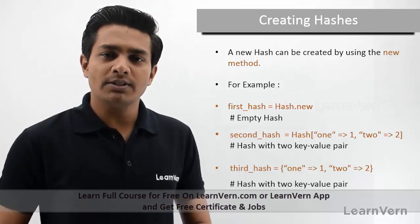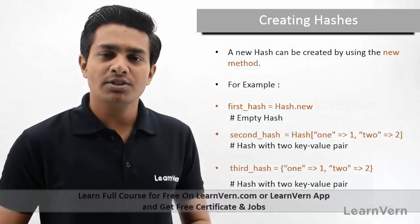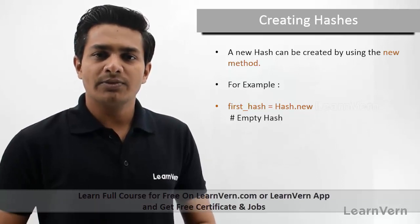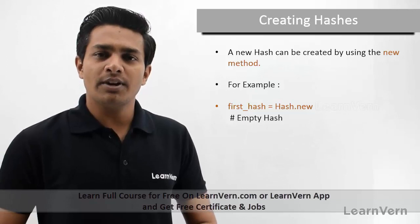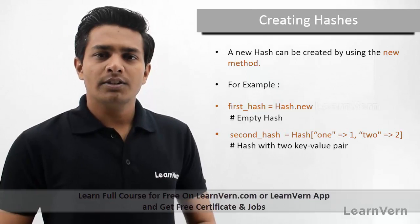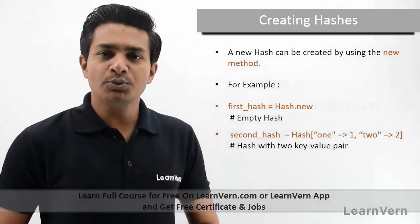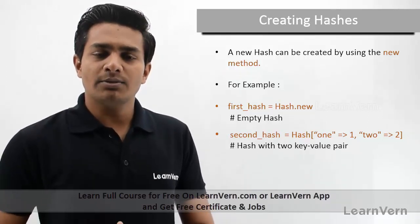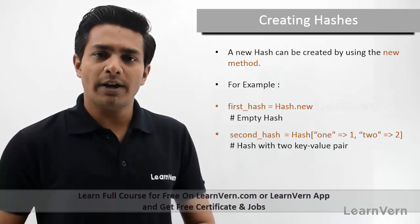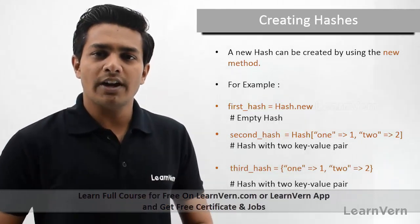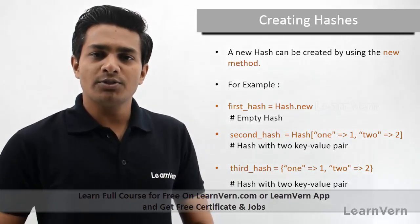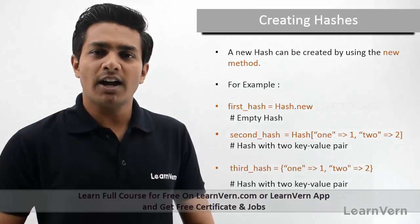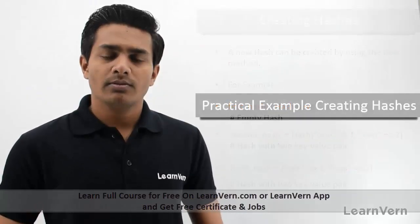Here on screen you can see I have created three different examples that show how we can create a new hash in Ruby. In the first example, I have created one blank hash into the variable first_hash using Hash.new, which creates an empty hash. In the second example, I have passed two key-value pairs to the hash. The third example shows an alternative way to create a hash using curly braces, where you pass key-value pairs directly.